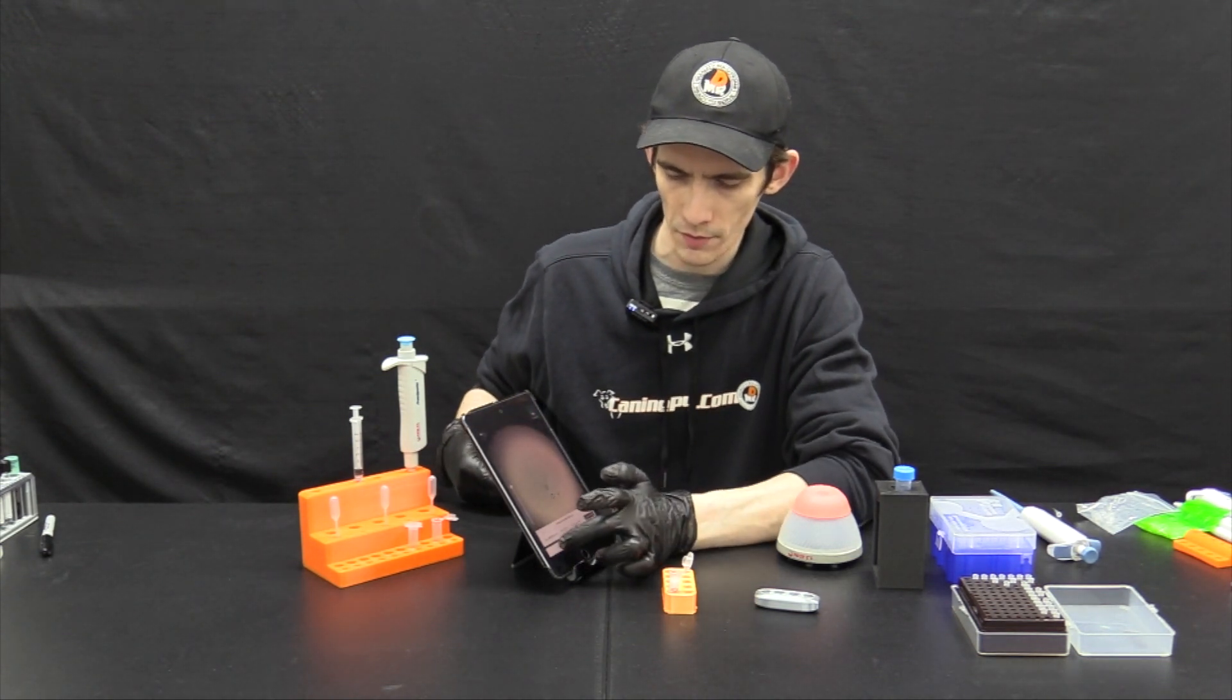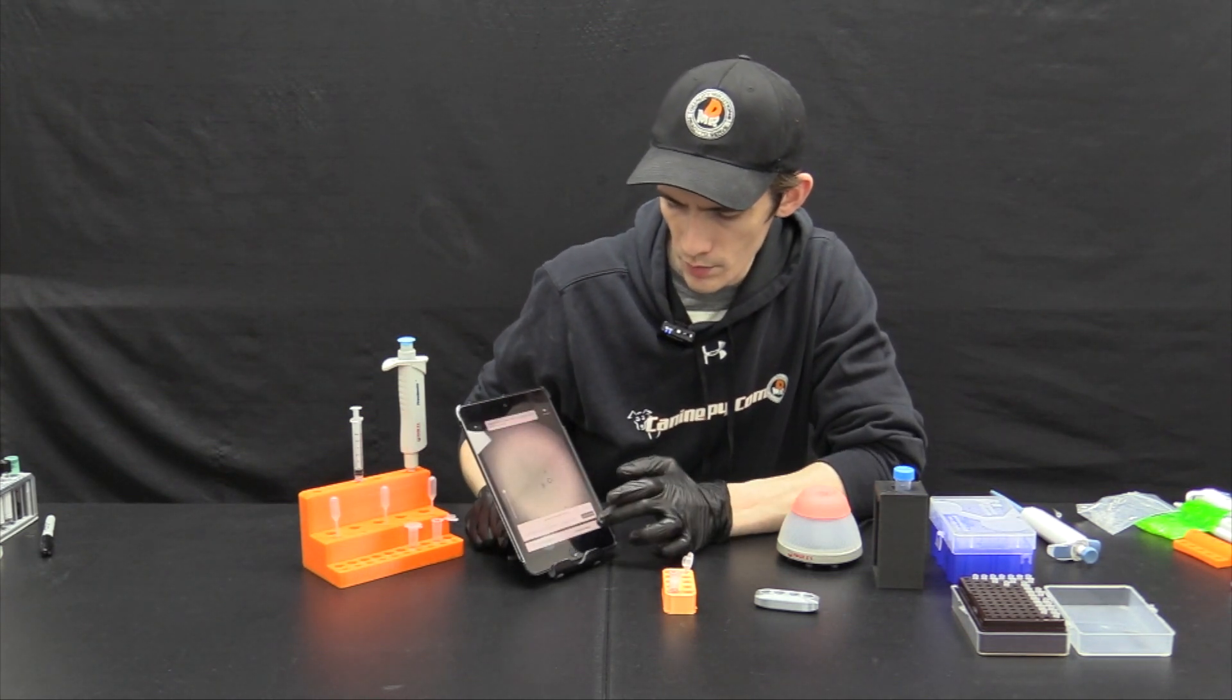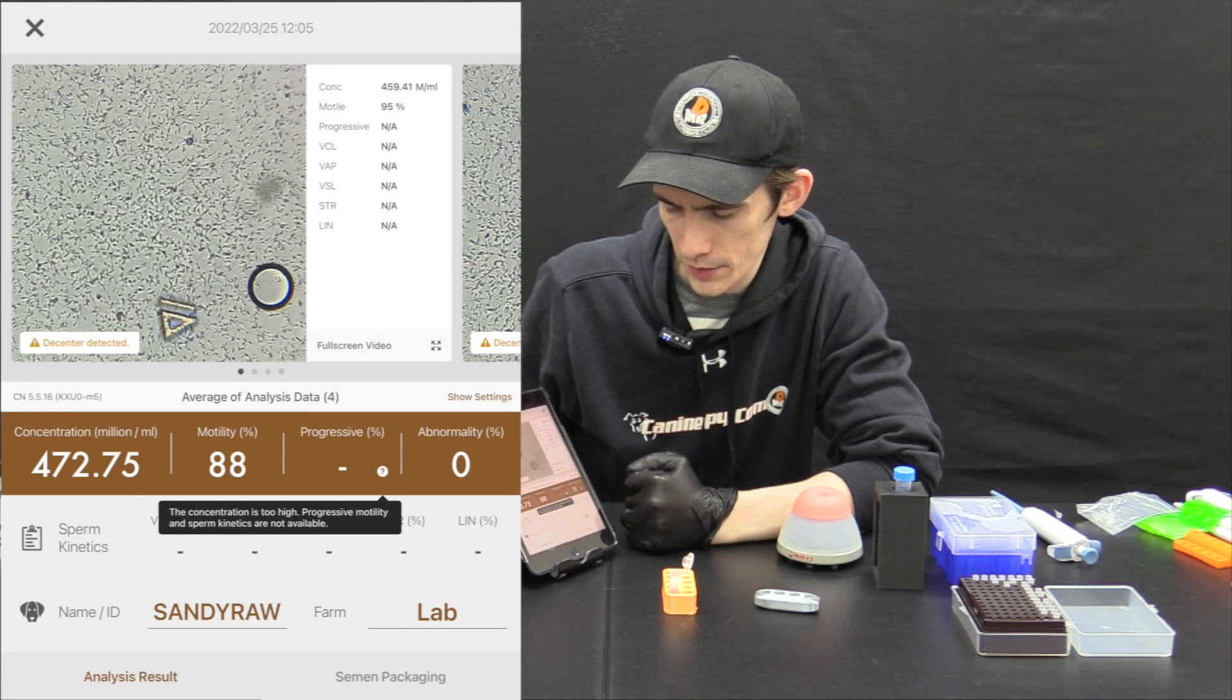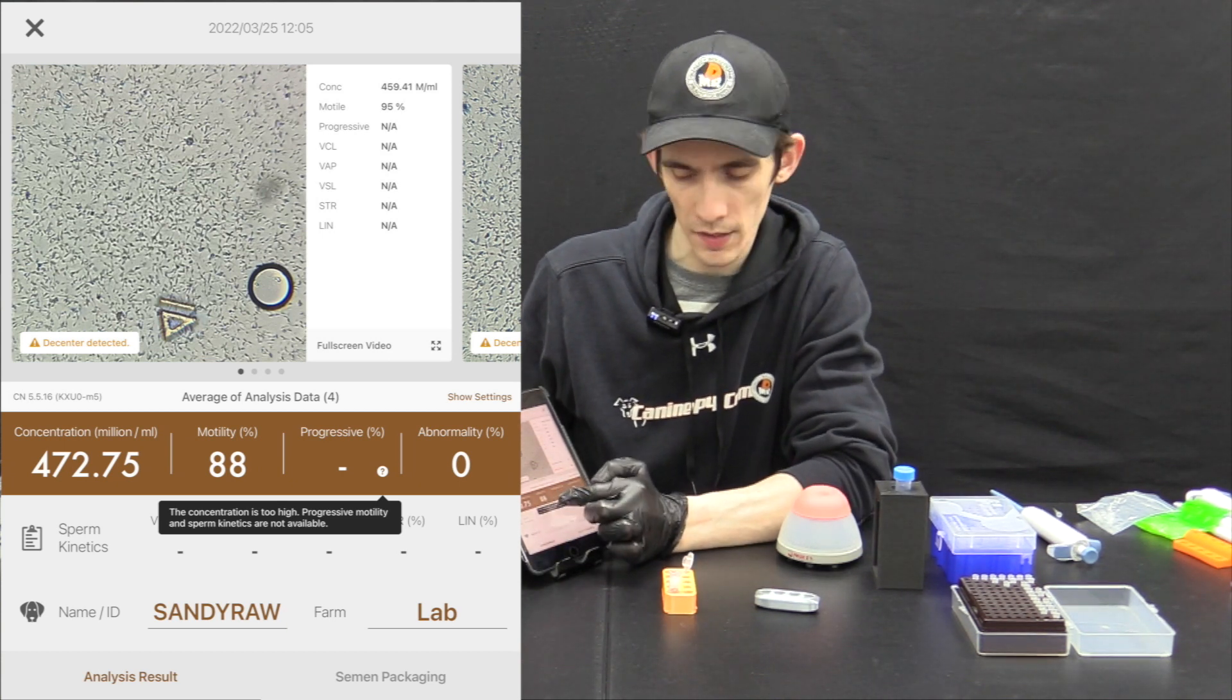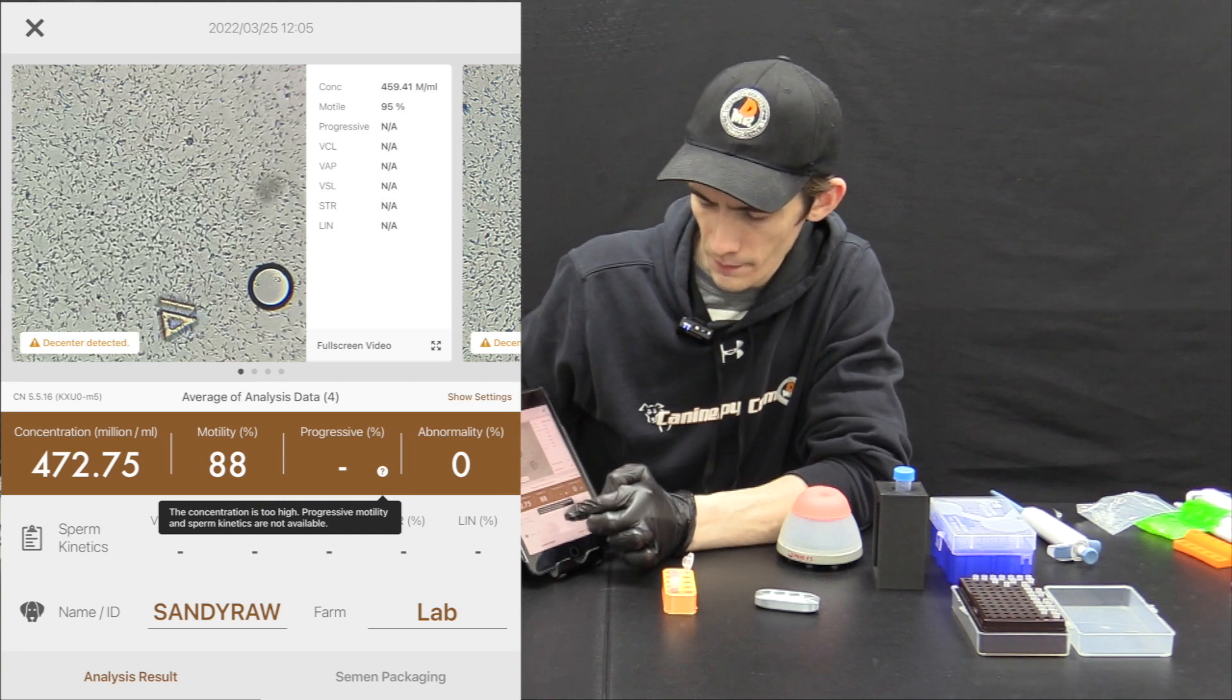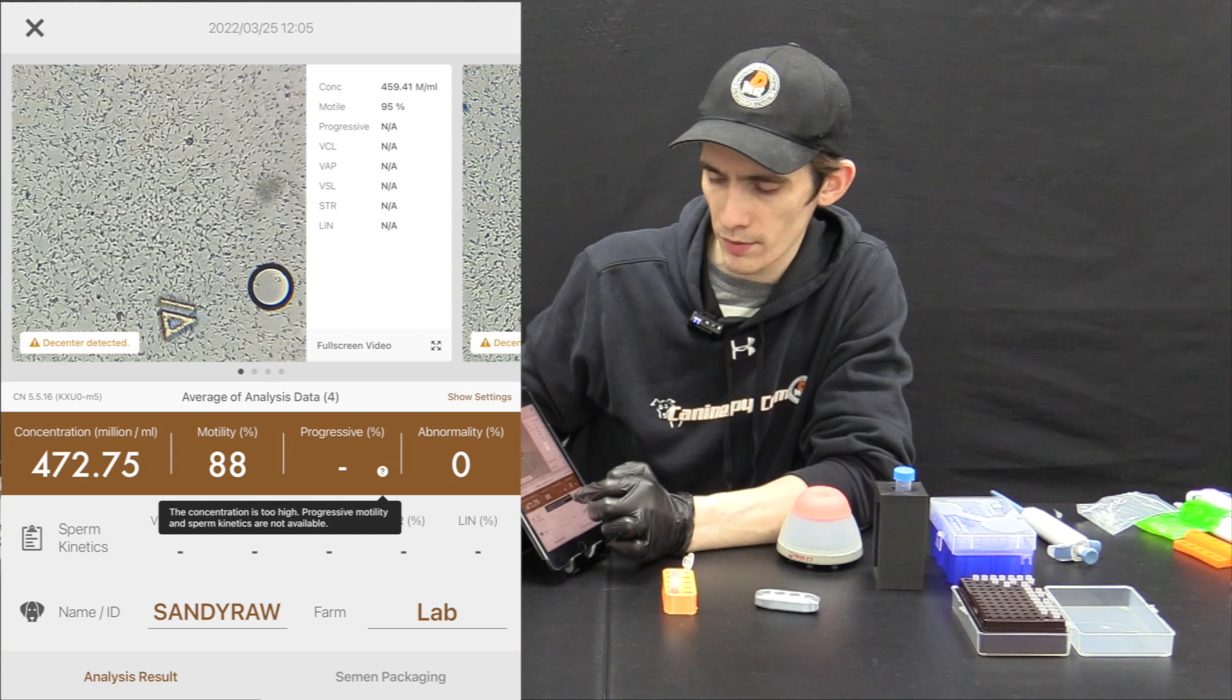Turn it another 90 degrees. Okay so now that we have our four readings we're going to go to complete analysis. We're going to take a look at the final average here of 472.75 million per milliliter. We have an average reading of 88 percent motility. However, we do not have a progressive reading. This is because as indicated in the app, the concentration is too high to produce this reading.